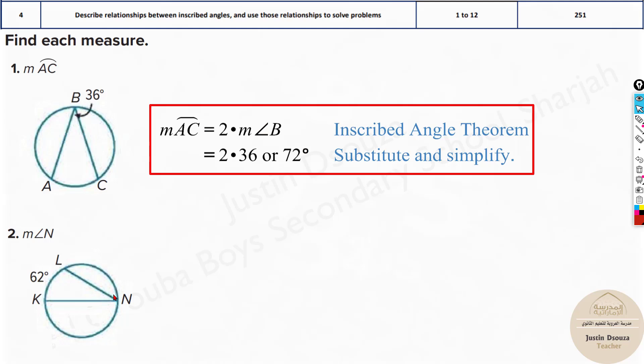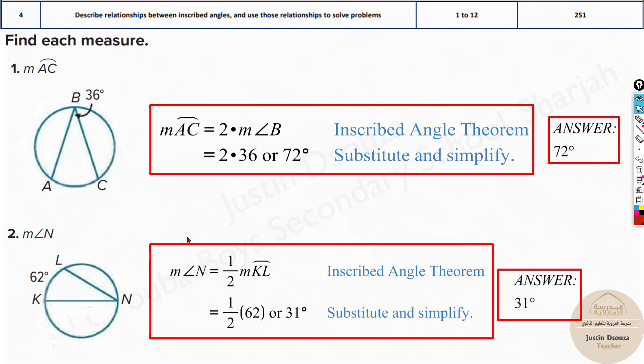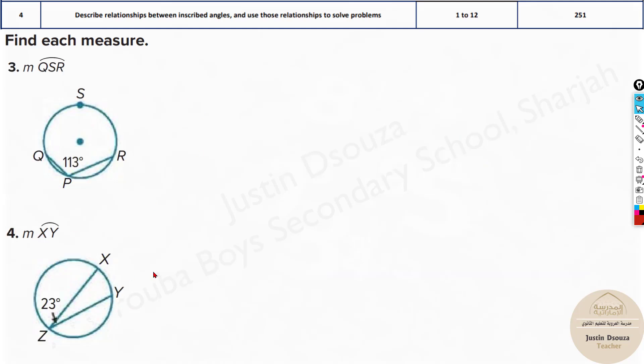Here they have asked to measure angle N. We have this arc. So the inscribed angle will be half of this arc. So it's 62 divided by 2, 31 would be the answer. Very straightforward problems. Please solve them by yourselves.